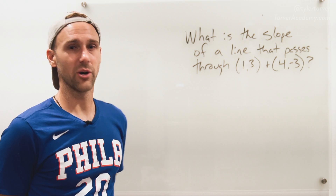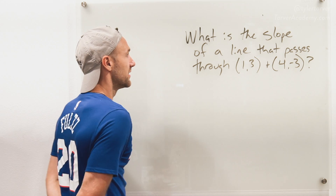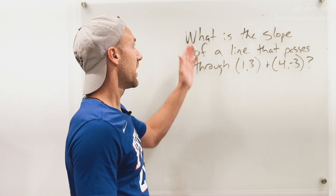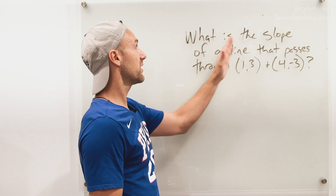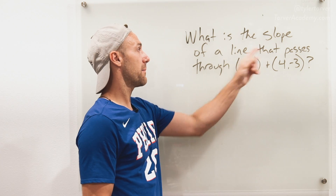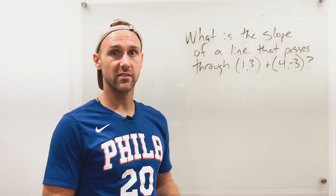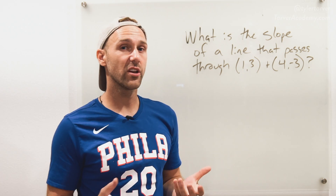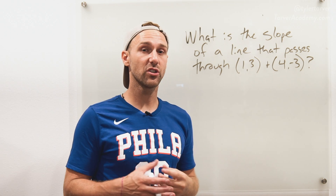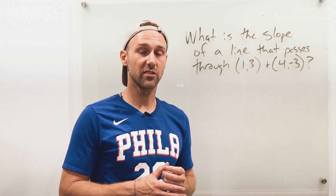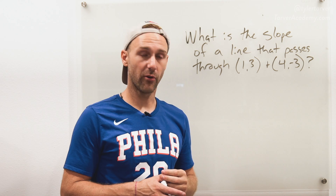Alright, cool. Here we go. I'll read it again: what is the slope of a line that passes through these two coordinates? So what I'm going to do here is I'm going to use the slope formula.